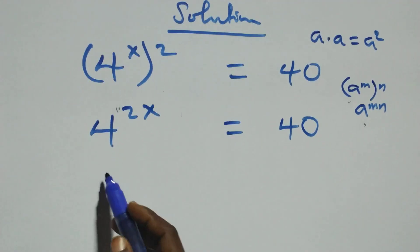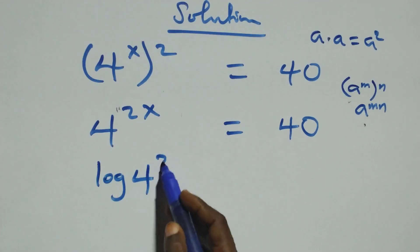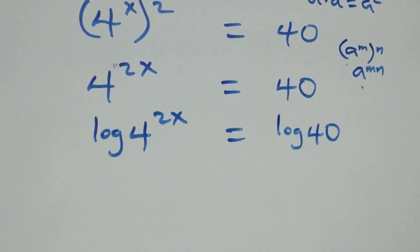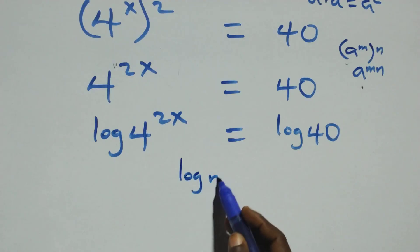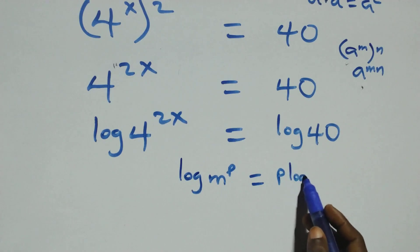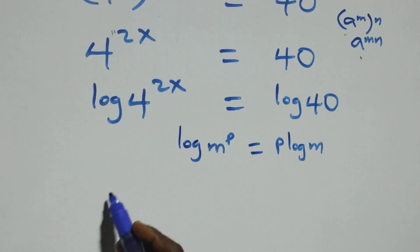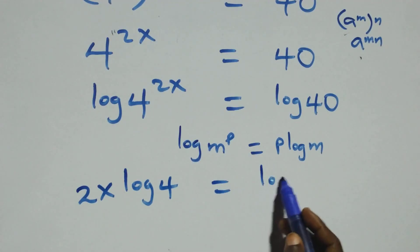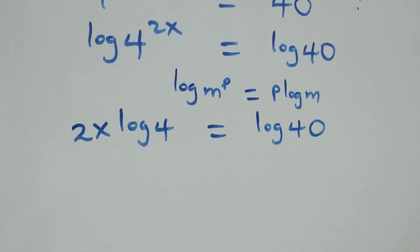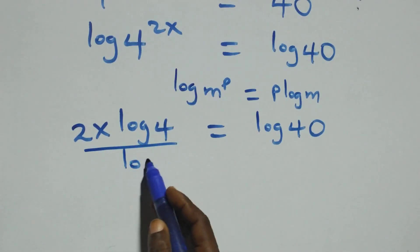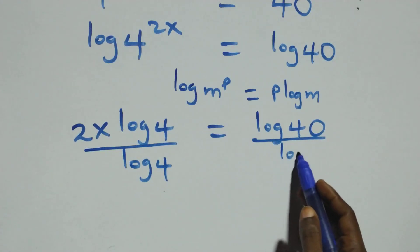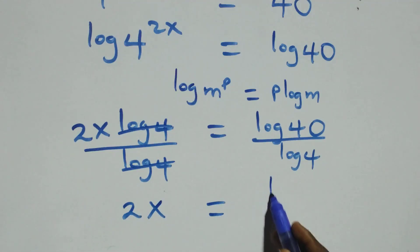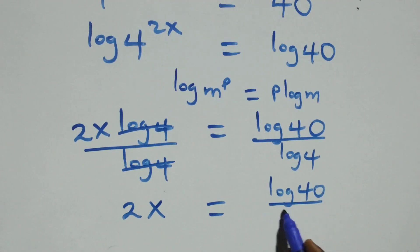The next step: we take the log on both sides. We have log of 4 raised to power 2x equals log 40. We apply the power rule of logarithms: log of m raised to power p is the same as p times log m. So we have 2x times log 4 equals log 40. Then we divide both sides by log 4. Log 4 cancels, and we have 2x equals log 40 over log 4.